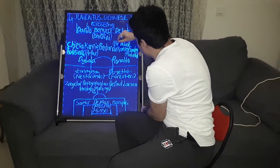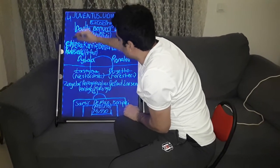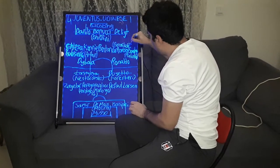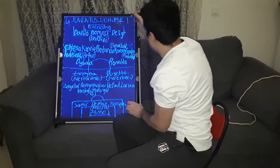Aaron Ramsey out, Bernardeschi in and Chiesa out, Kuliszewski in. After this substitution, Kuliszewski played on the right, Bernardeschi played on the left.